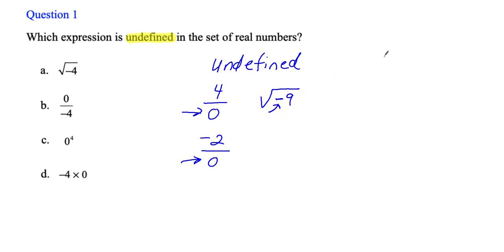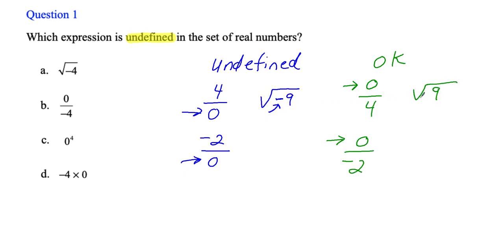Let's look at a couple of examples that are okay, just so you're clear on the difference. If I flip this so the zero is on top, it's okay — it's not undefined. Zero divided by negative two is okay. And if there's no negative inside the square root symbol, that's okay too. You can also have a negative outside the square root symbol — as long as it's not inside. So the undefined expressions are division by zero and negative under a radical. Based on that, the answer is A — there's a negative sign inside the square root symbol.